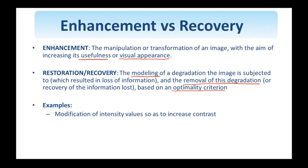With restoration or recovery, we are modeling the degradation the image is subjected to, and our objective is to remove this degradation and therefore recover some of the information that was lost, based on an optimality criterion. There are two important steps involved: the modeling and the determination of an optimality criterion based on which this degradation is removed. The first example is the modification of intensity values to increase contrast — since no degradation modeling or optimality criterion is involved, this is definitely an enhancement approach. The second example is deconvolution, where the degradation is modeled as the convolution of the original image with the impulse response of a linear, spatially invariant degradation system, and the objective is to undo this effect based on an optimality criterion — so this is a restoration problem.